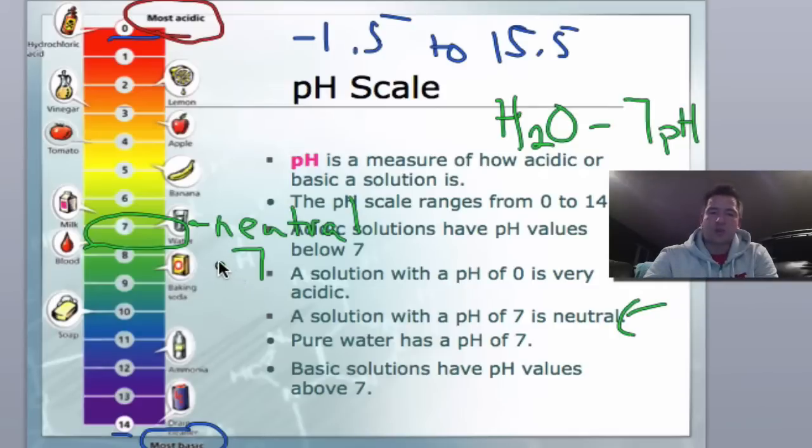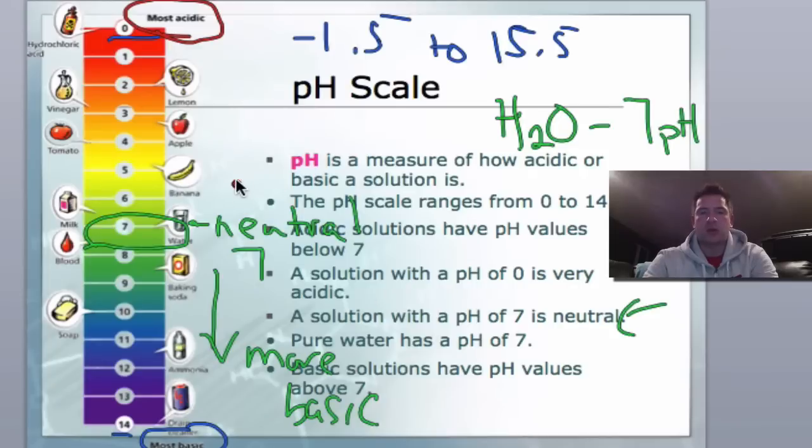As we go towards 14 from 7, it's going to become more basic. And as we go down towards 0, it's going to become more acidic.